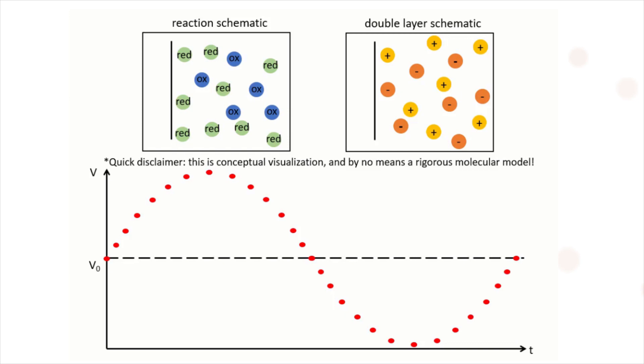In this example, we use an AC current with a frequency on the timescale of the reaction and the double layer formation. Because species convert rapidly between the reduced and oxidized form, a concentration gradient has no time to develop. Thus, diffusion effects on electrode performance are not measured in the current response. The double layer capacitance and reaction rates control the current behavior.